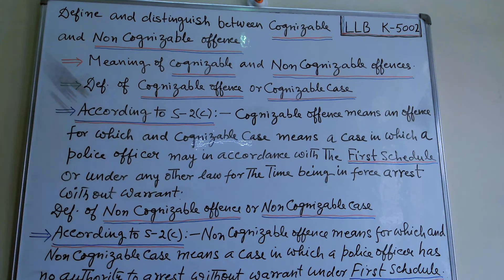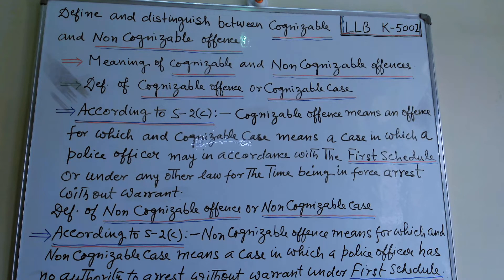My dear friends, I am taking the fifth question of second paper K5002, a very important question: Define and distinguish between cognizable and non-cognizable offense, or cognizable cases and non-cognizable cases. The difference between these two types of cases is very essential to know.